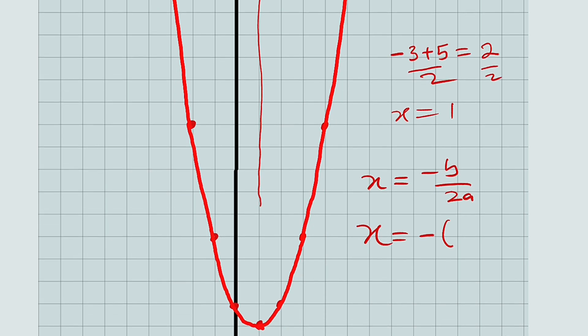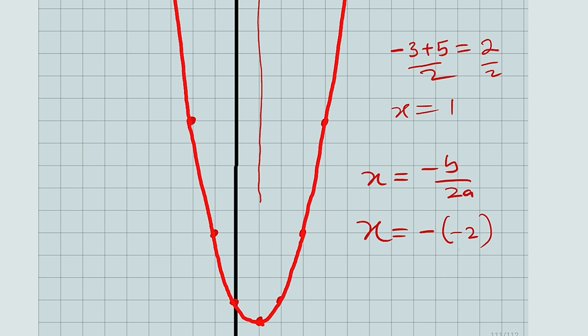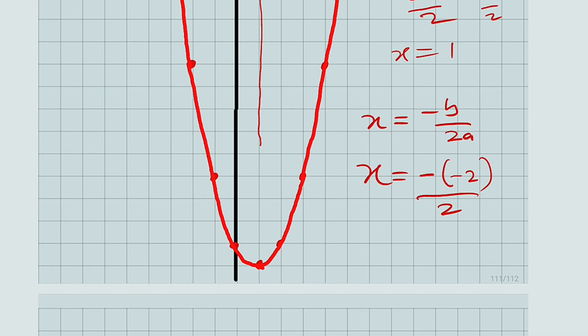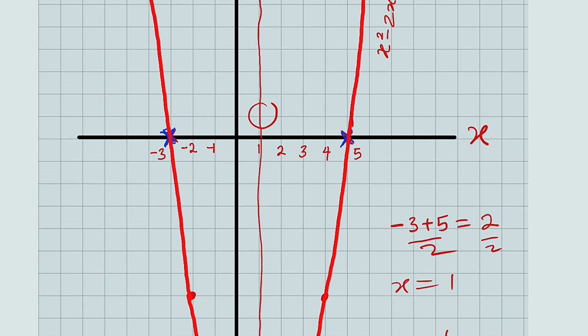This is minus 2 divided by 2, and minus minus is plus. We have 2 divided by 2 equal to 1. So the line of symmetry can be obtained from the equation without constructing any graph.